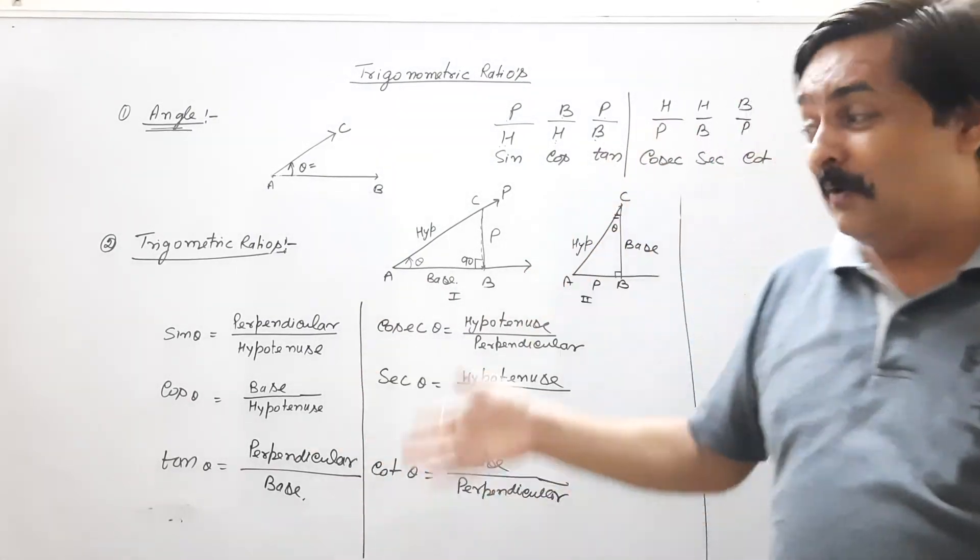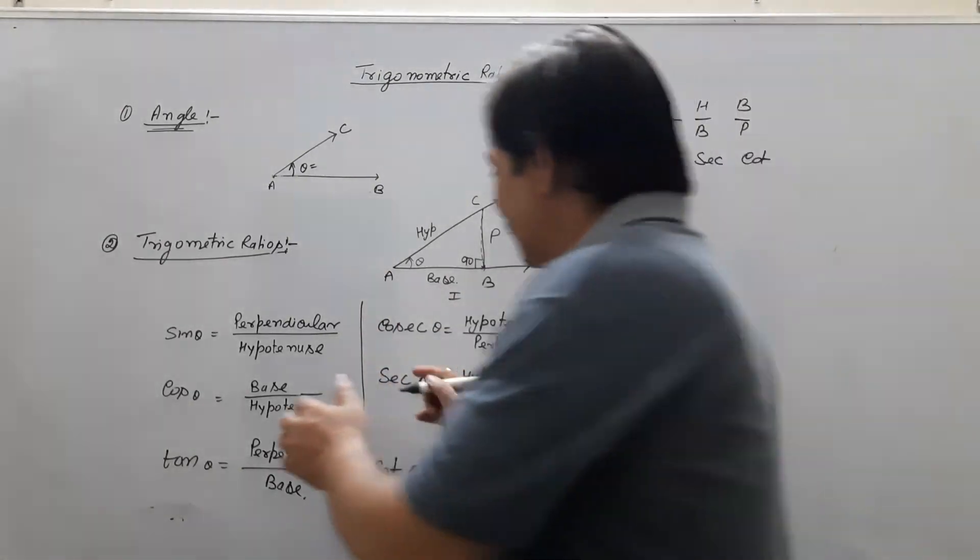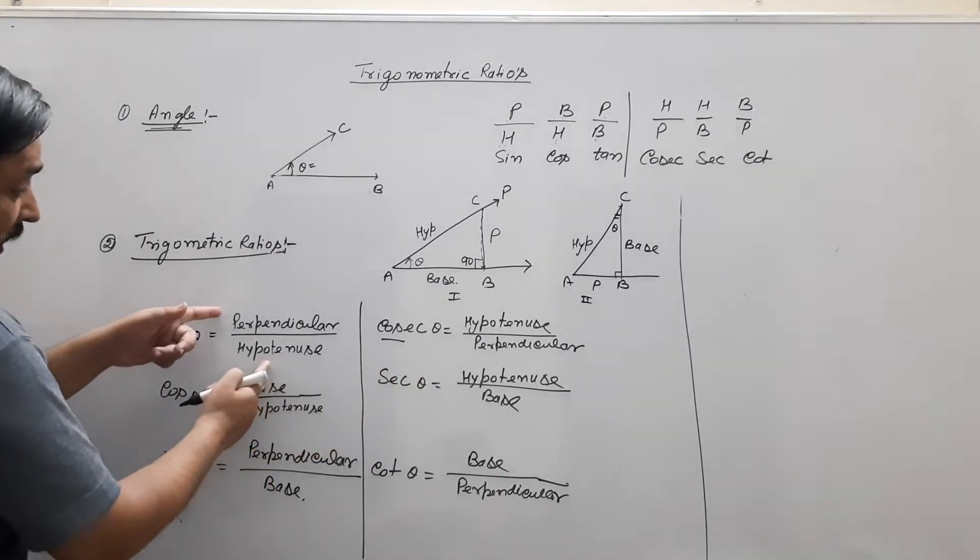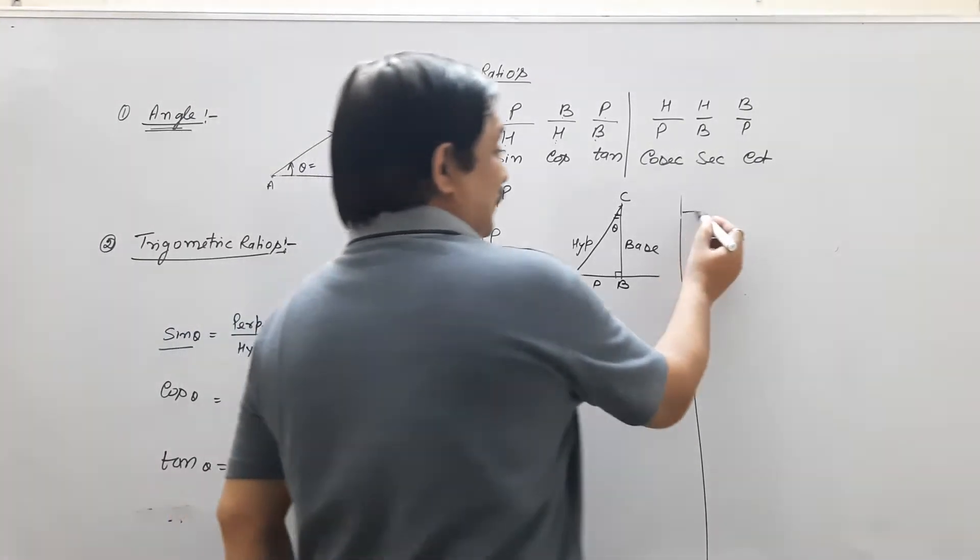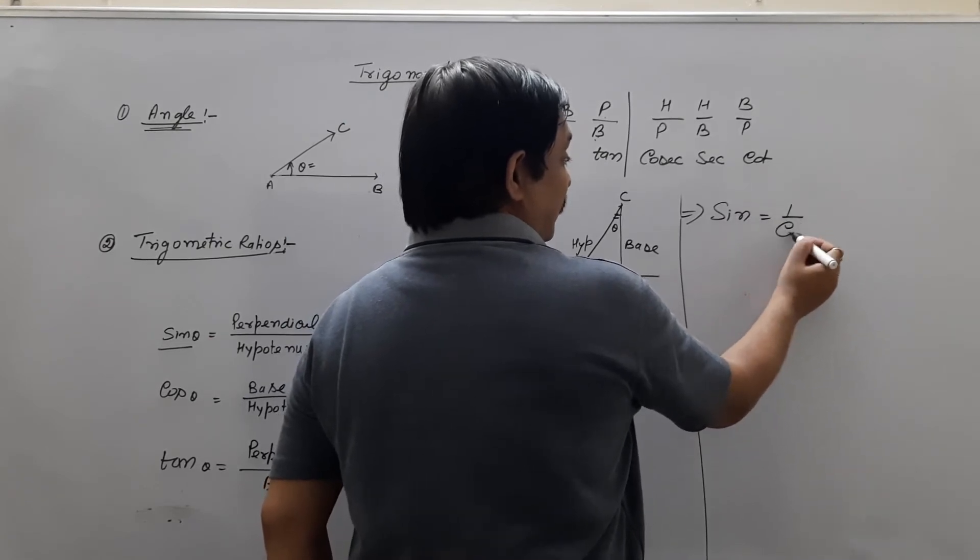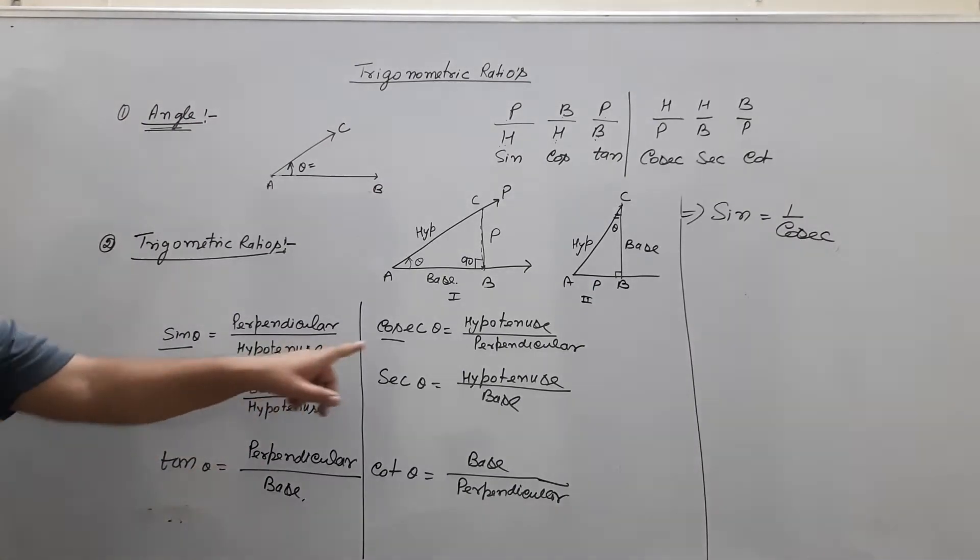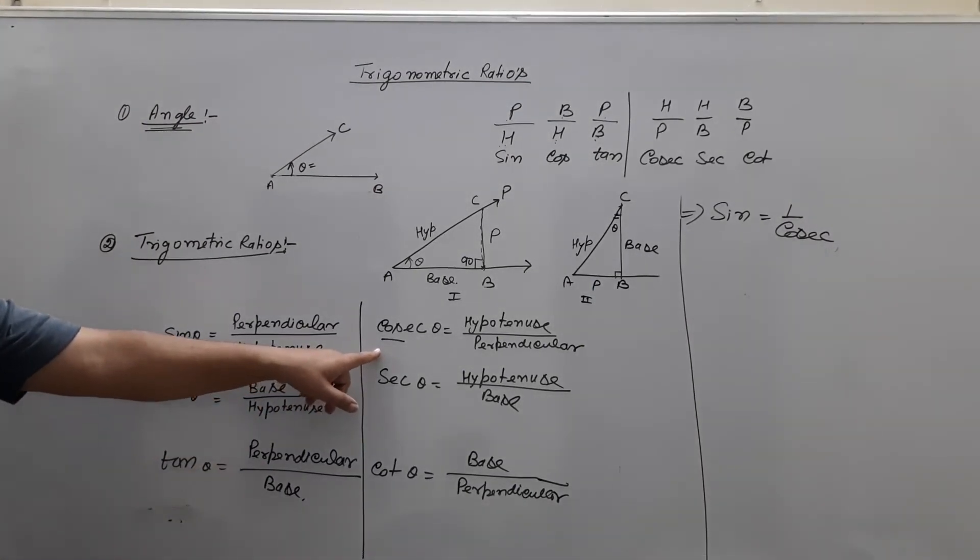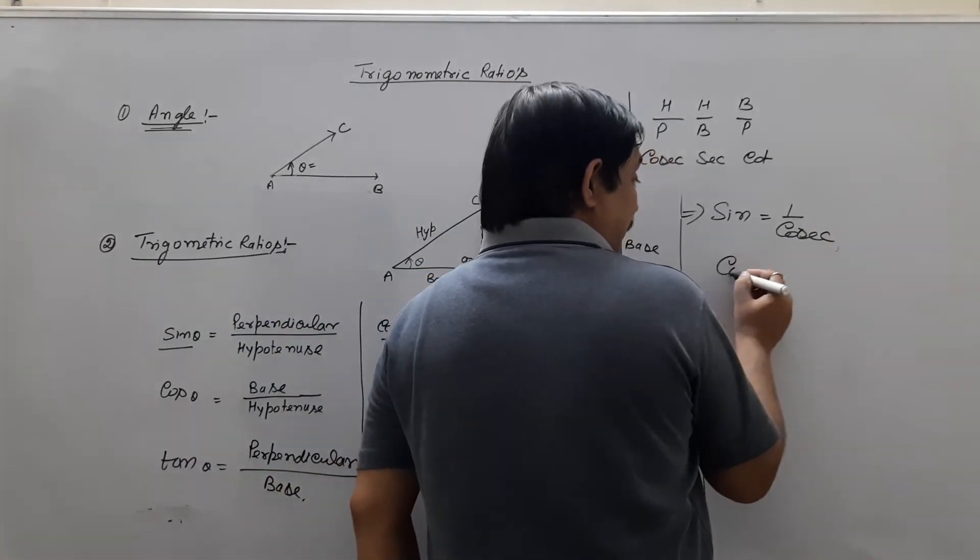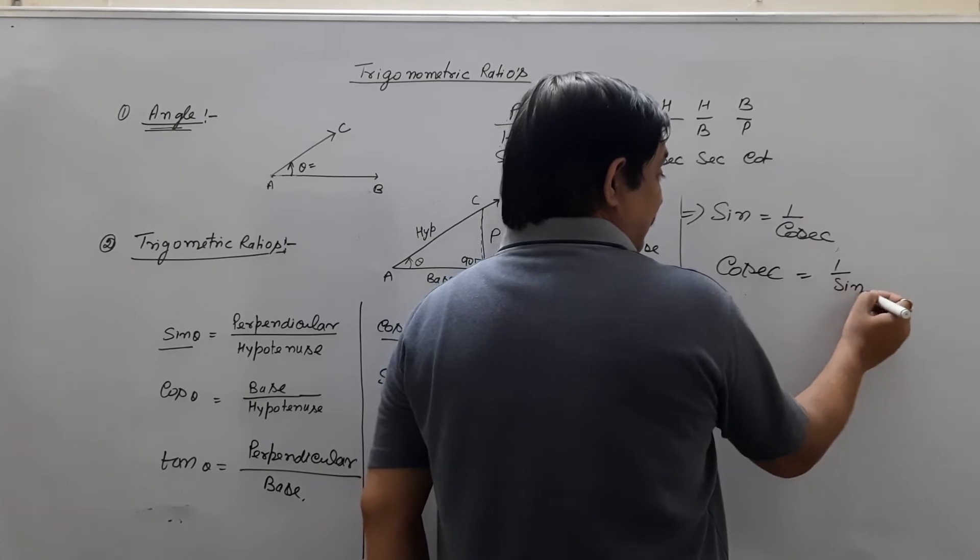After that, you have different relations between sin and this. Suppose, according to this and this, you have the same relation. Sin and cosec, you have the reciprocal, so you can write sin reciprocal, one upon cosec. You can also write cosec is equal to one upon sin.